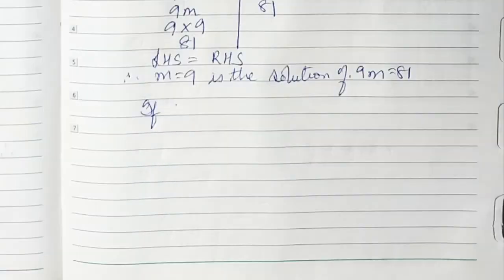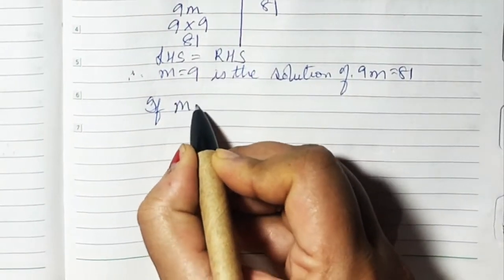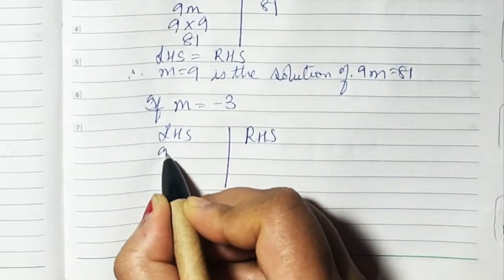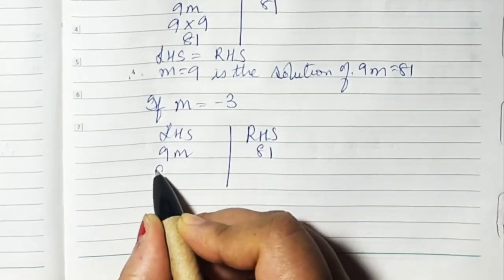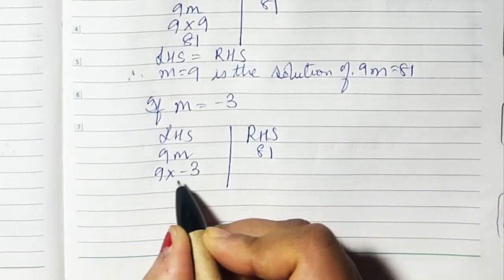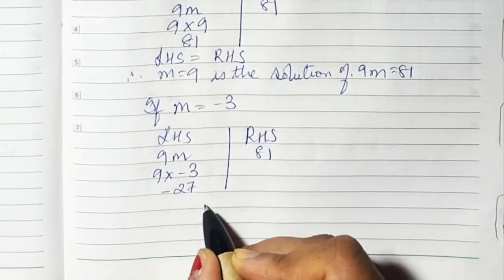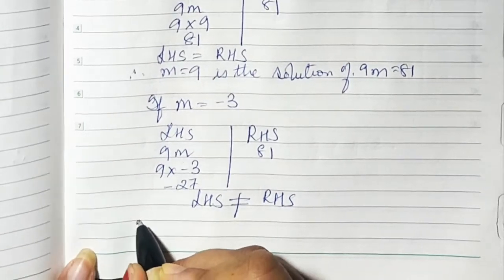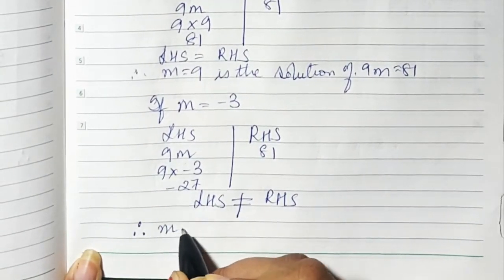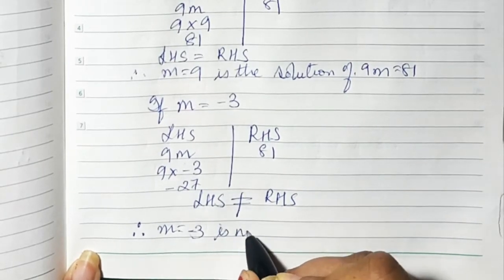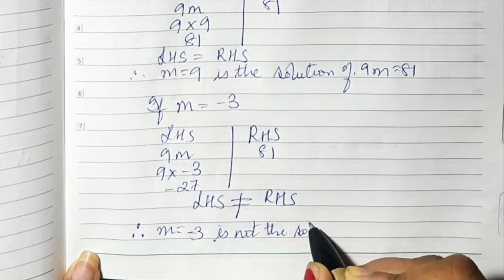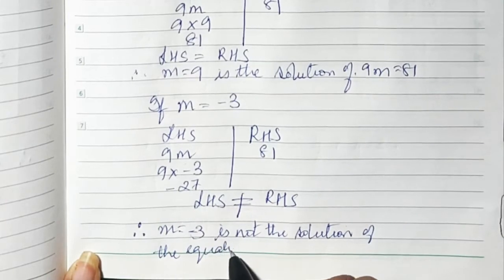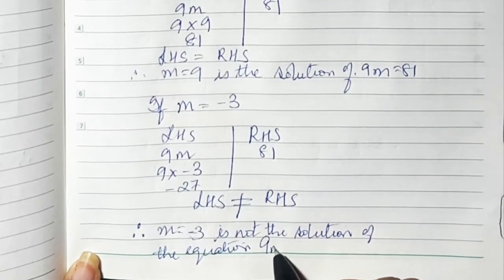The last value is M = -3. LHS is 9M and RHS is 81. Substituting: 9 × (-3) = -27. Since -27 ≠ 81, LHS is not equal to RHS. Therefore, M = -3 is not the solution of 9M = 81.